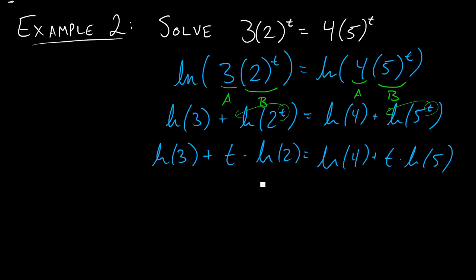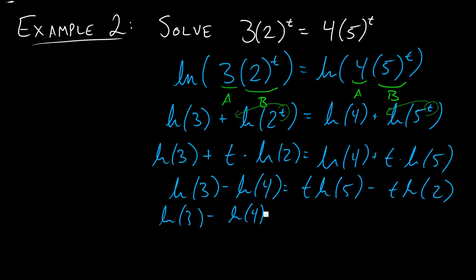So we'll want to group up the terms with t on one side, these two terms, and then we'll group up all the other terms on the other side. So we'll have ln of 3 minus the ln of 4 equals t*ln(5) minus t*ln(2). And so to solve for this we'd have the ln of 3 minus the ln of 4. And on here we'll pull out that t, so we'll have t(ln(5) - ln(2)) in parentheses.